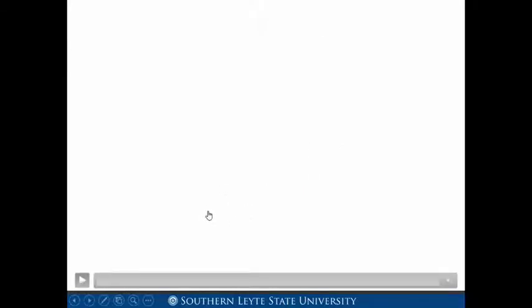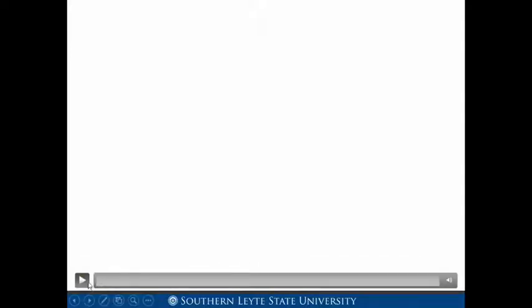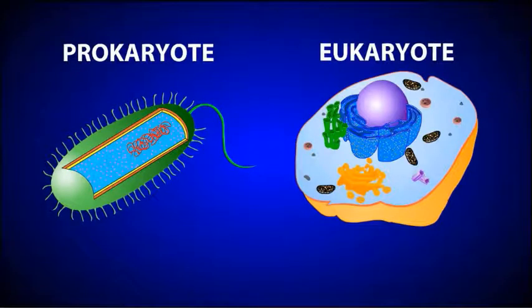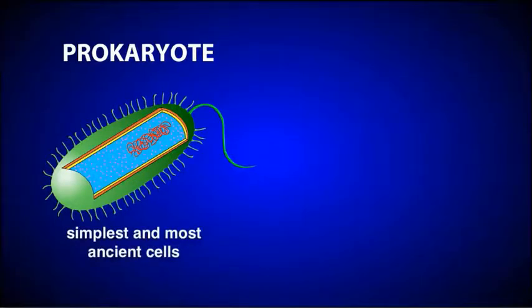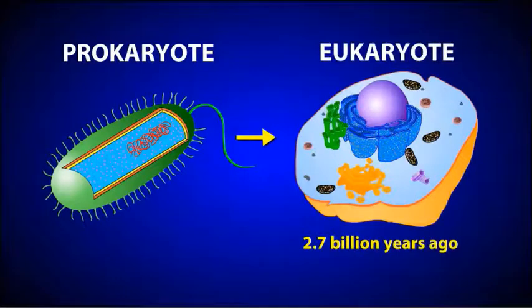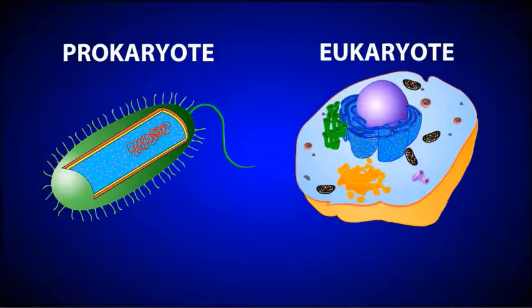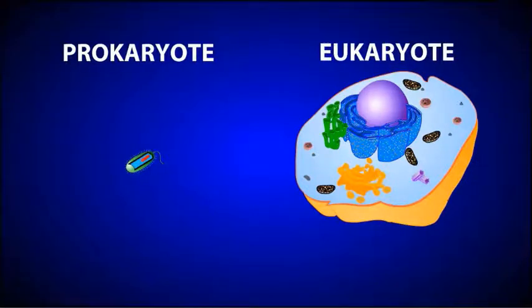There is a video regarding learning objective number one. On Earth, there are two major types of cells: prokaryotic and eukaryotic. Prokaryotic cells are the simplest and most ancient types of cells. They were the only form of life on Earth for billions of years before eventually giving rise to eukaryotic cells. Looking at them side by side, you can see a number of differences.